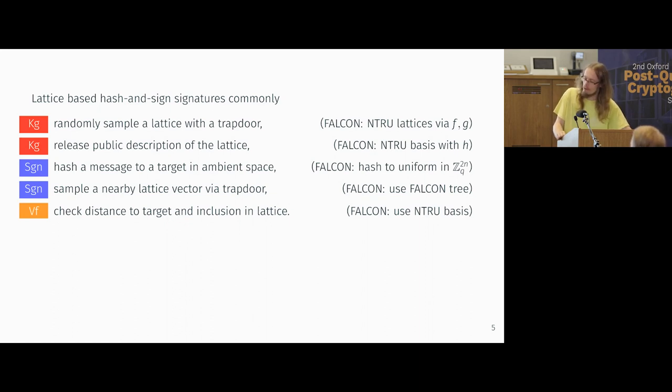And then when you want to make a signature, you hash this message to some point in your ambient space, and you use the trapdoor to find a close vector. And then when you want to verify it, you verify indeed that this vector from your lattice is close and that it's in the lattice.